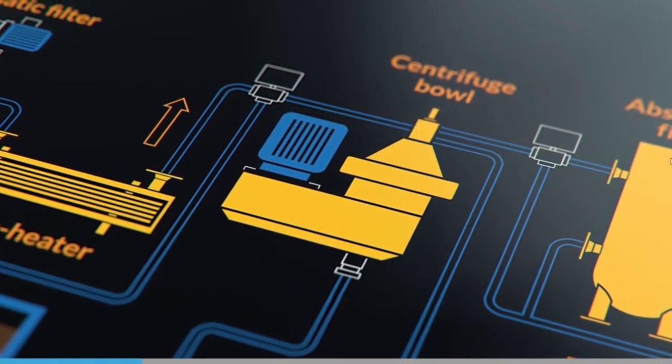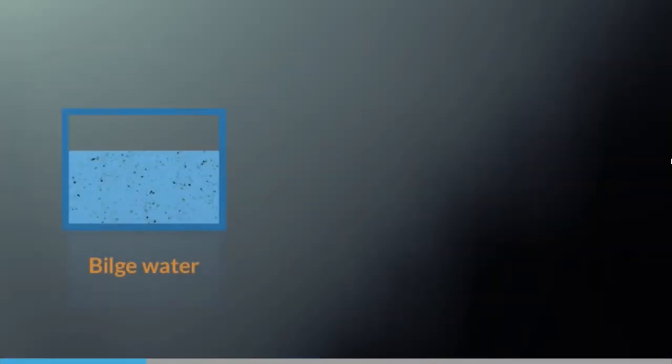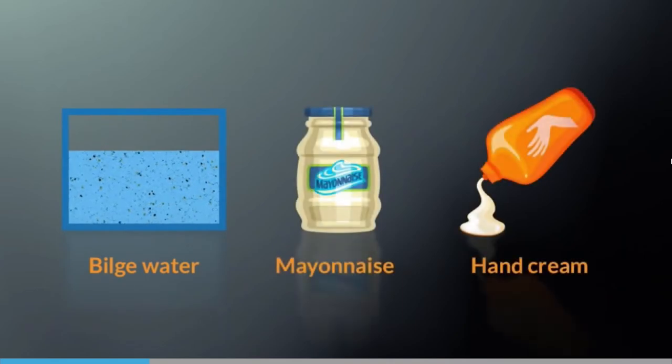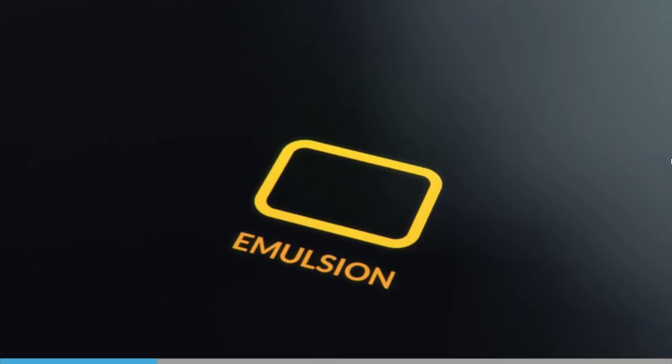But before we start, solve this riddle. What might bilge water, mayonnaise and hand cream have in common? Emulsion.